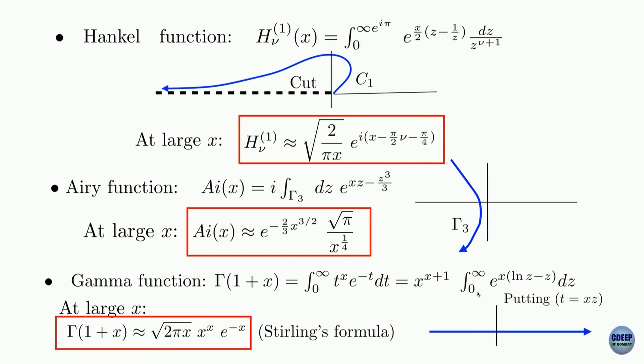And this time the contour is just the real axis from 0 to infinity. This point is 0, and you are going from 0 to infinity.